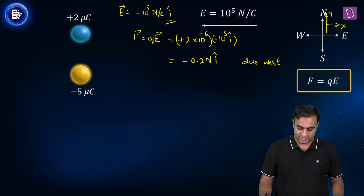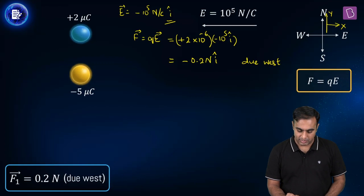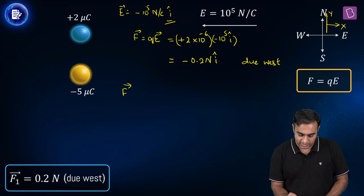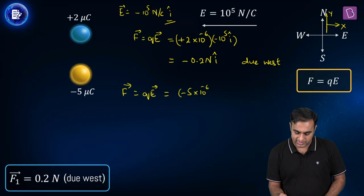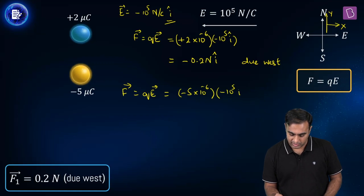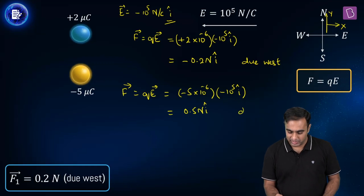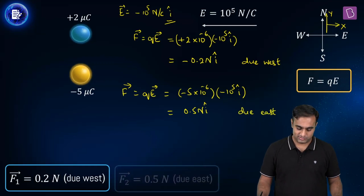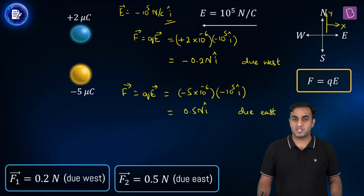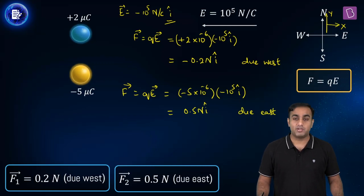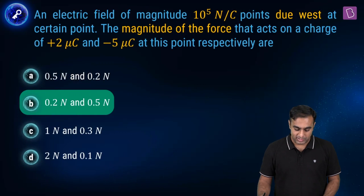For case two, a minus five microcoulomb charge is placed at that position. The force is minus five times ten to the power minus six coulombs multiplied by minus ten to the power five newtons per coulomb î, giving plus 0.5 newtons î. The direction is due east. These are the forces experienced by the two charges. Looking at the options, the correct one is B.